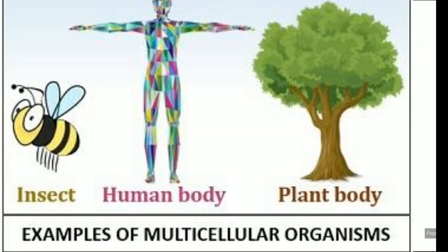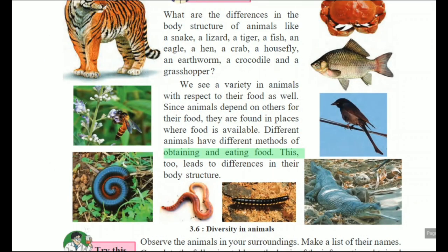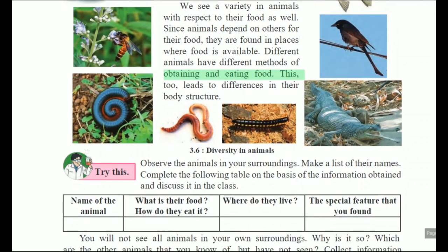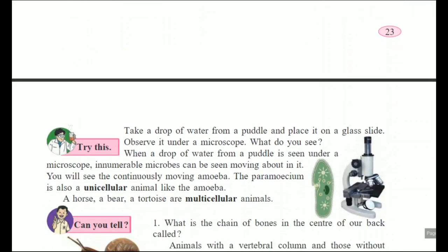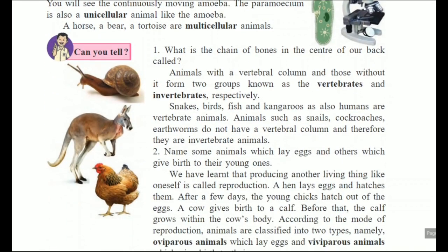The second type is multicellular organisms — 'multi' means many, more than one cell. According to the presence of cells, animals can be bifurcated into unicellular and multicellular. If one cell is there it is unicellular; if many cells are there they are called multicellular.